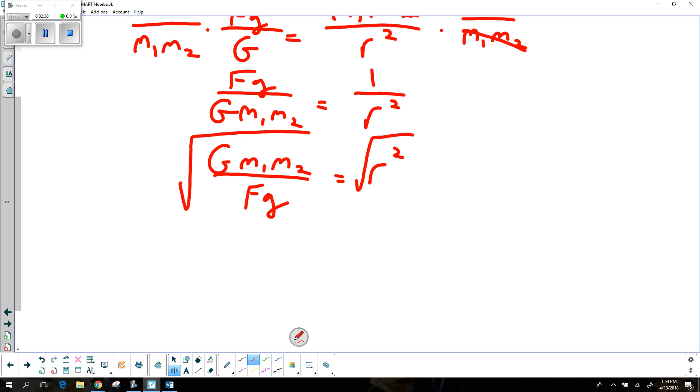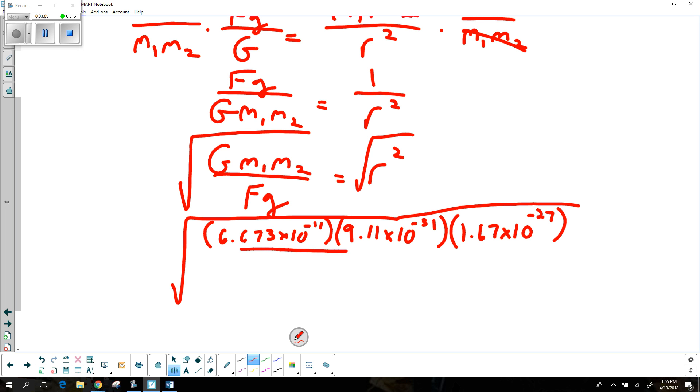So that's the rearrangement to isolate r. Then I throw a bunch of stuff in. Here's the gravitational constant, mass of my electron, mass of my proton, and then the force of gravity.